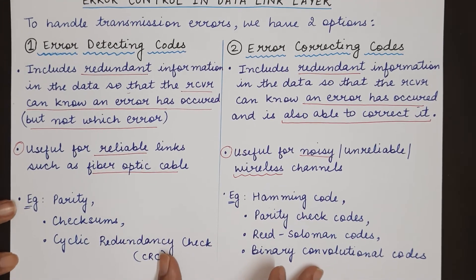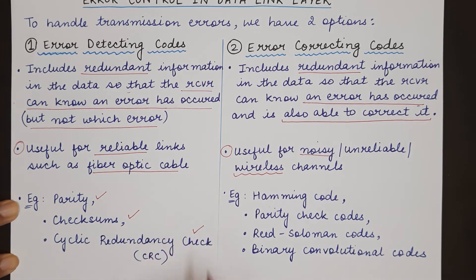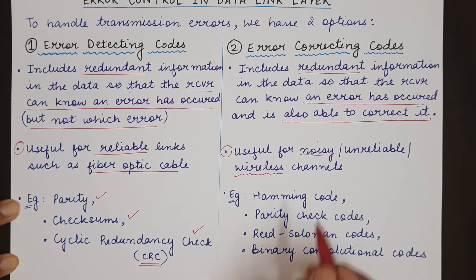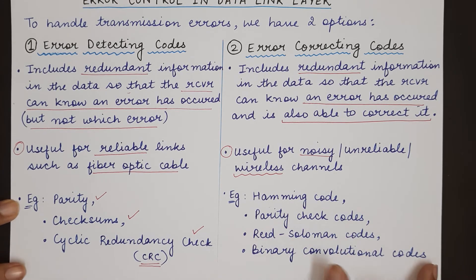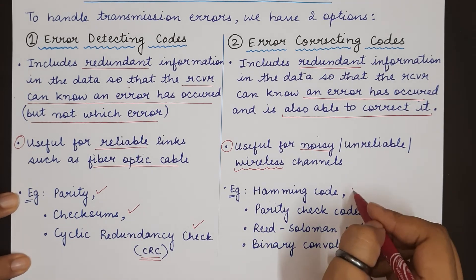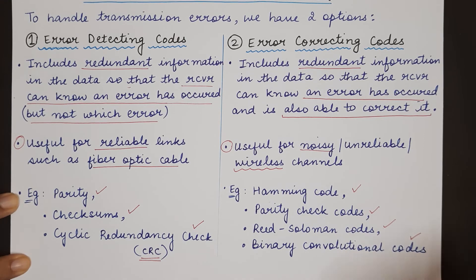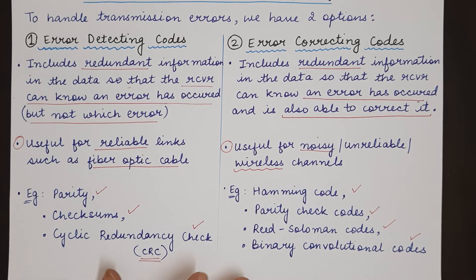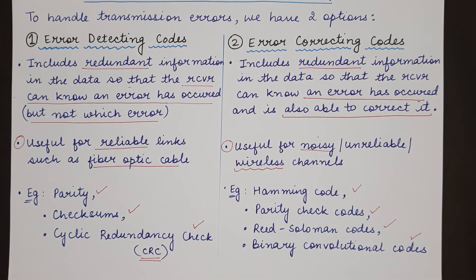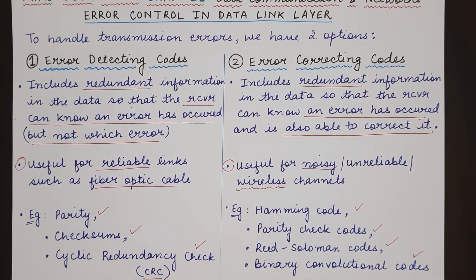Some examples of error detecting codes are parity, checksum, and Cyclic Redundancy Check, also known as CRC. Some examples of error correcting codes are Hamming code, parity check codes, Reed-Solomon codes, and binary convolutional codes. This was the difference between error detection and error correction.